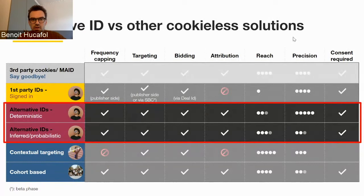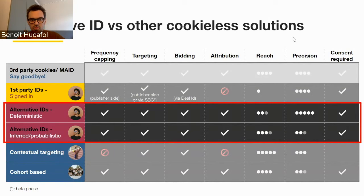To highlight the key difference between alternative IDs and other solutions to the end of third-party cookies: third-party cookies cover all advertising use cases. First-party publisher IDs can replace some use cases but are not able to be used for attribution measurement. Alternative IDs can cover all these use cases, with differences in reach and precision. Contextual targeting won't cover frequency capping or attribution, and cohort-based targeting can cover some use cases but with constraints in reach and precision.